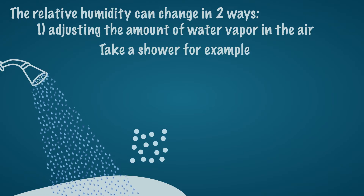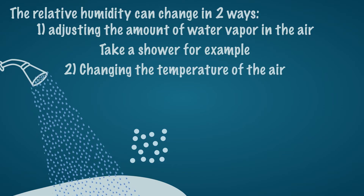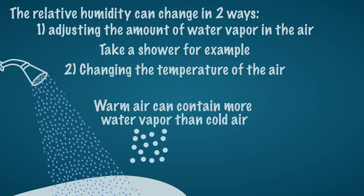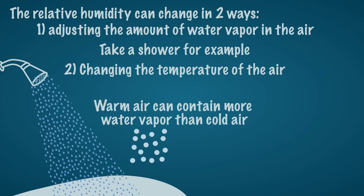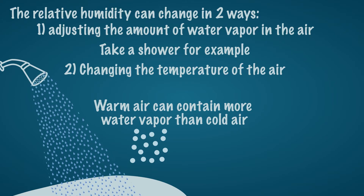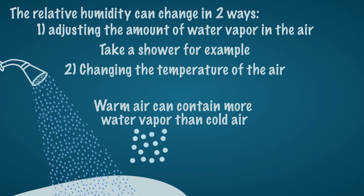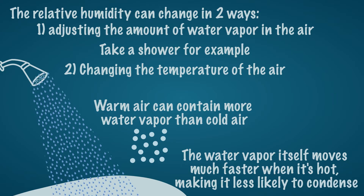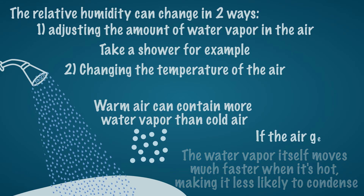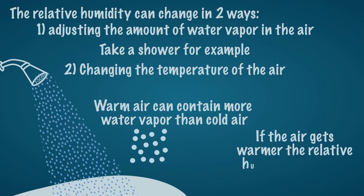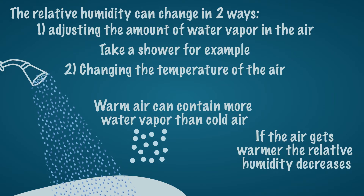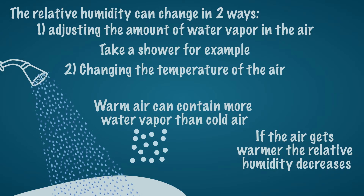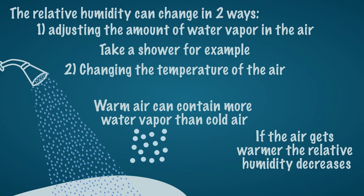The second way is by changing the temperature of the air. Remember the following rule: warm air can contain more water vapor than cold air. Sometimes this is explained as if warm air can hold more water vapor. While this is true in itself, it is also a bit misleading, because it is not the warm air that holds the water vapor — the water vapor itself moves much faster when it is hot, making it less likely to condense. This means that if the air gets warmer but the same amount of water vapor remains in the air, the relative humidity decreases. The maximum number of possible particles of water vapor that could be present in the air increases, but the number of particles present remains the same.